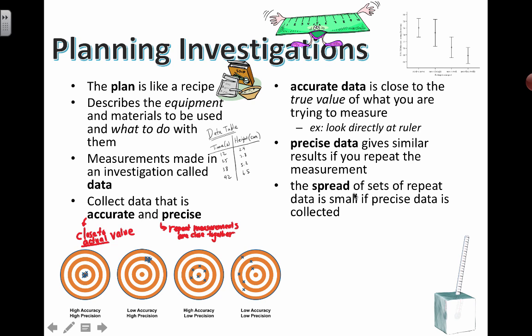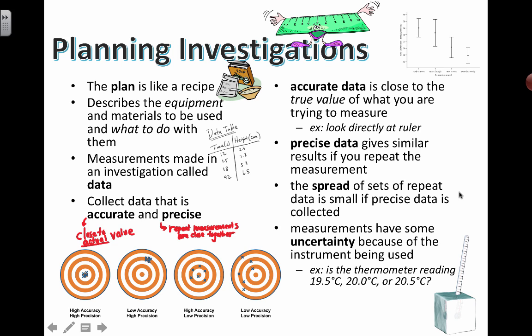The spread of sets of repeat data is small if precise data is collected. If this is your average point, and this is the highest point, and this is the lowest point from your data set, for example, you plot the average, and then you end up with the maximum and the minimum. So I can see that for this measurement, there was less precision than this measurement because there's less of a spread. More spread here, less spread here. Less precise, more precise. And you can talk about that in your evaluation as well.